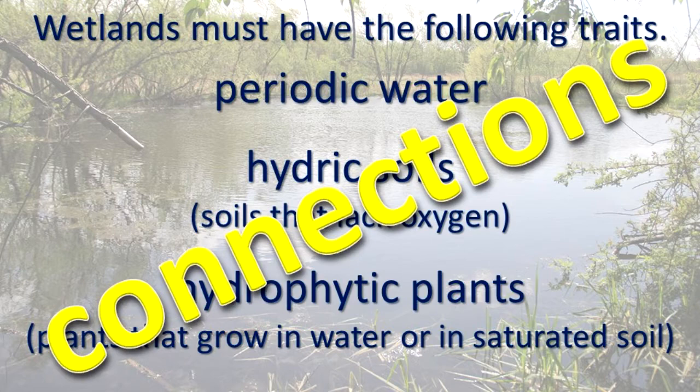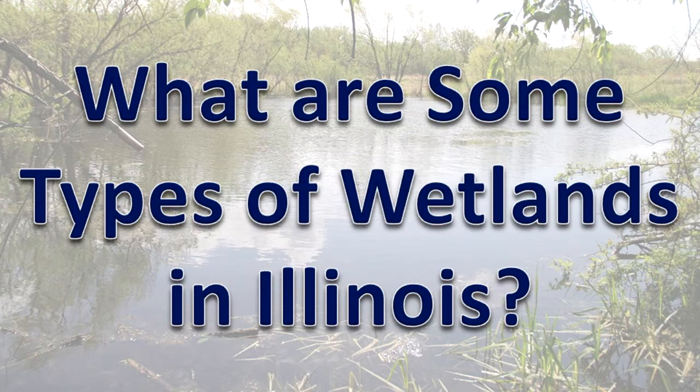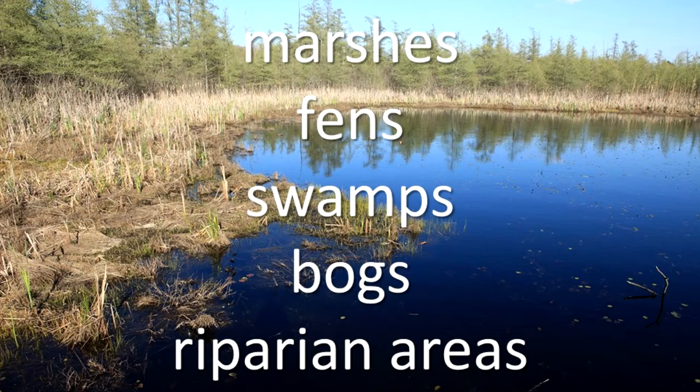Wetlands serve as connections between dry land and permanent water. What are some types of wetlands in Illinois? Marshes, fens, swamps, bogs, and certain riparian areas are wetlands in our state. Other wetlands include forested wetlands, wet prairies, and scrub-shrub wetlands.